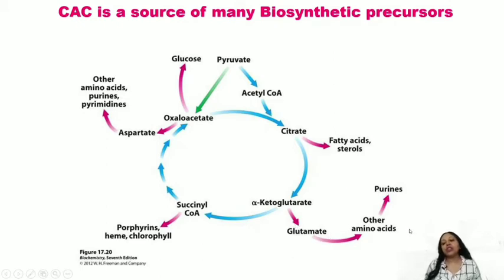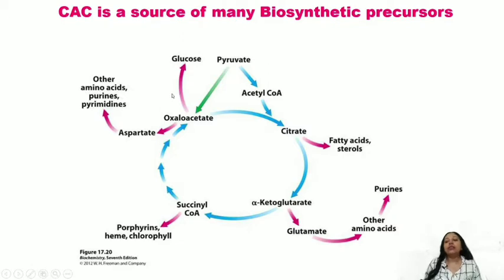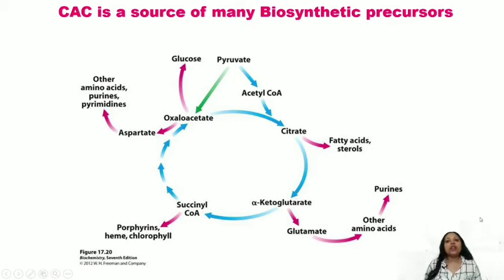Citric acid cycle intermediates give rise to the generation of amino acids and purines. Succinyl coenzyme A forms porphyrin, heme, and chlorophyll. Oxaloacetate has many functions: when blood glucose is low, it is required for gluconeogenesis to form glucose, and also to generate various amino acids, purines, and pyrimidines. So the citric acid cycle is not just important for ATP generation — it is a source of many biosynthetic precursors.